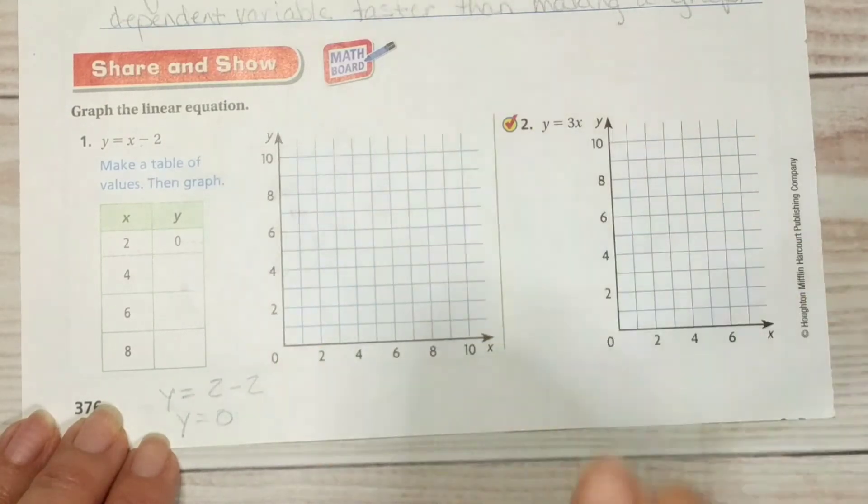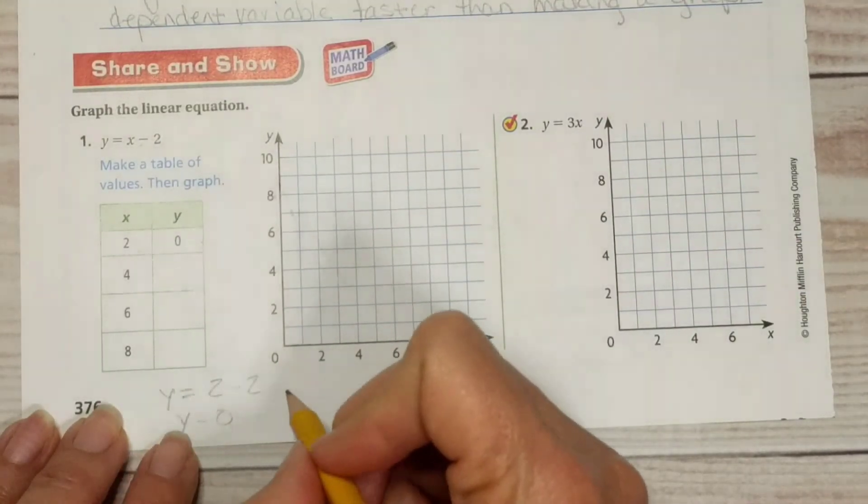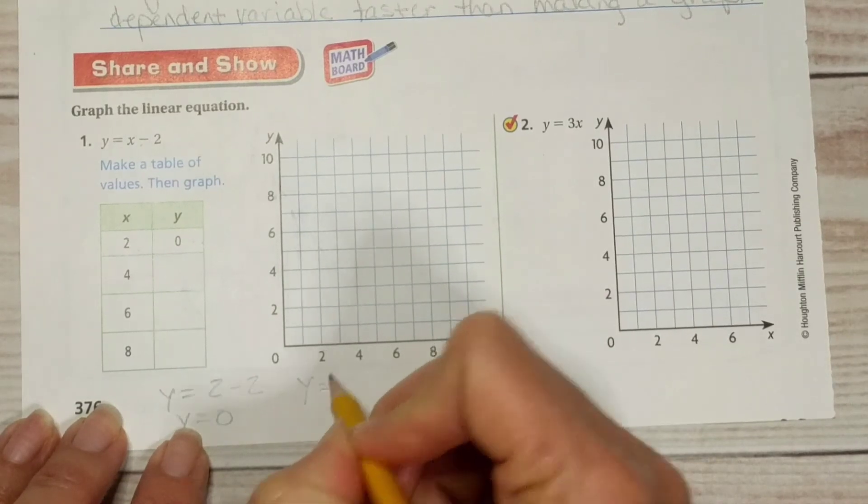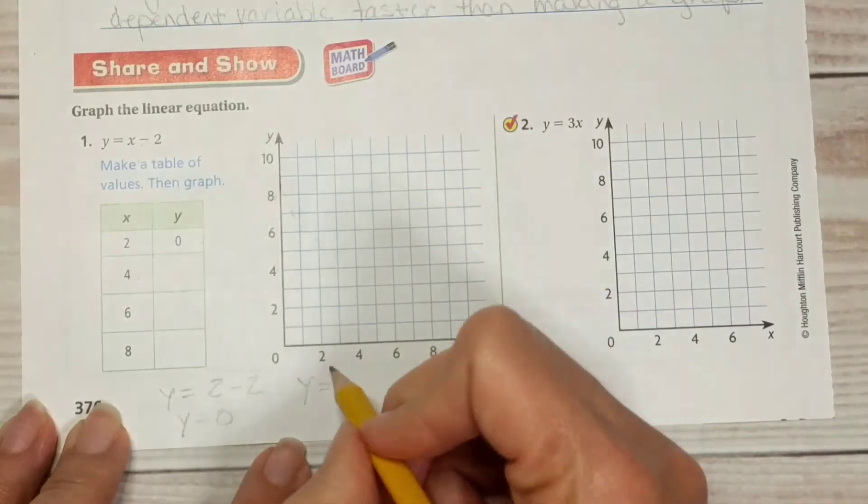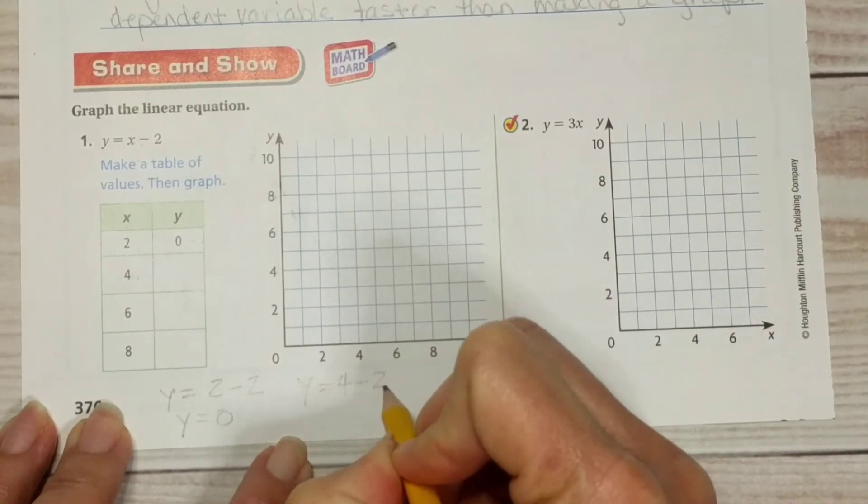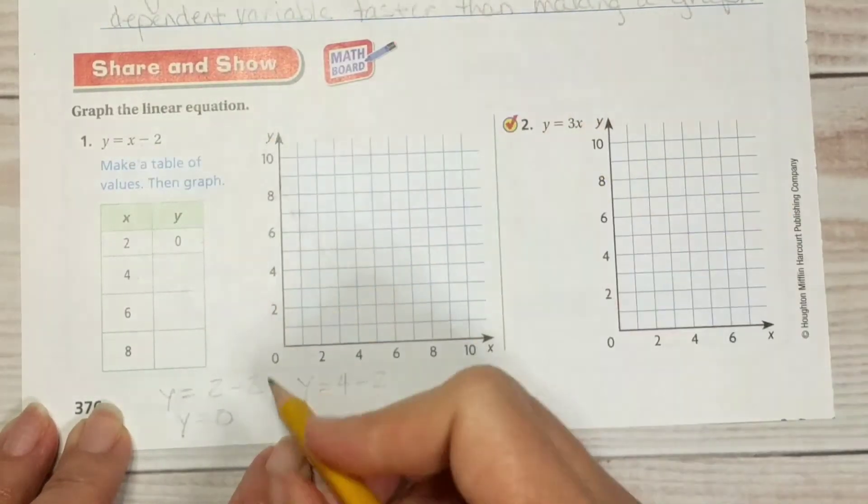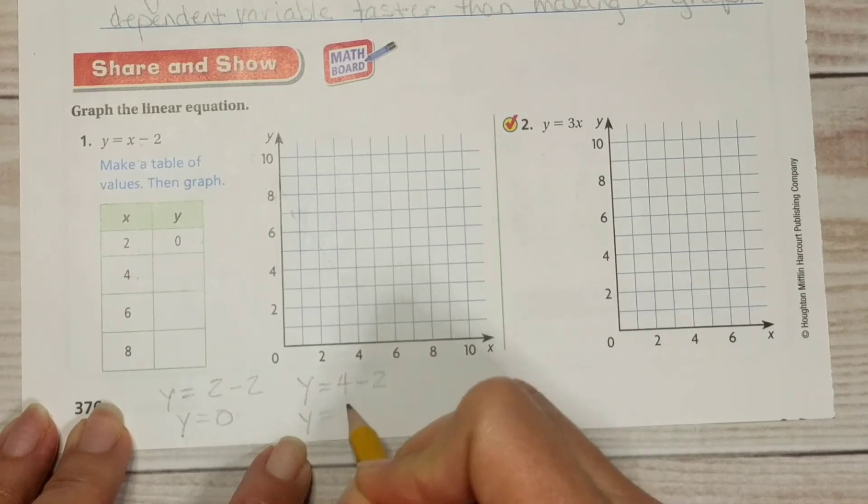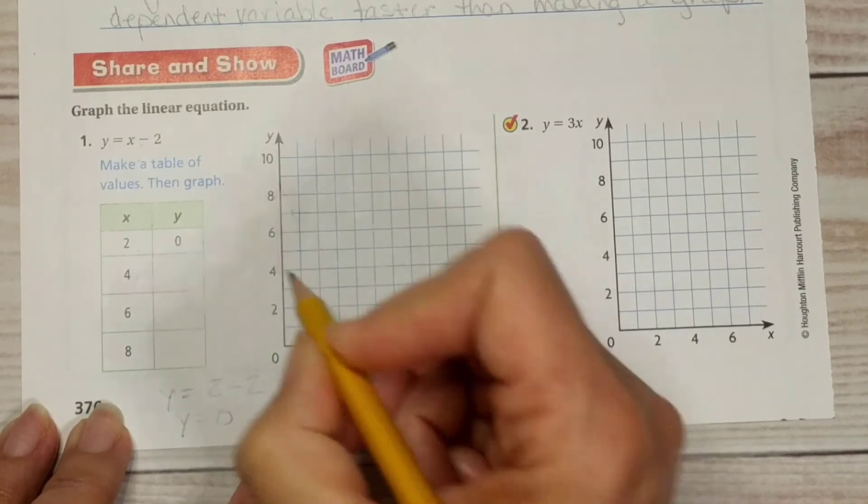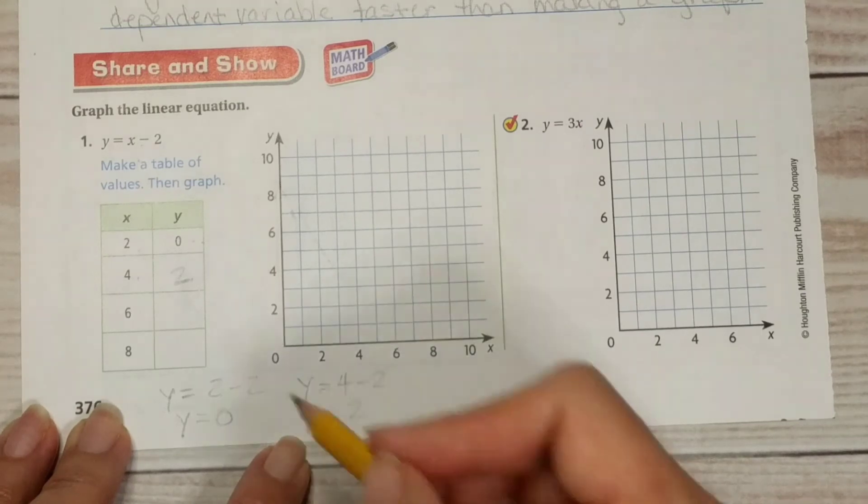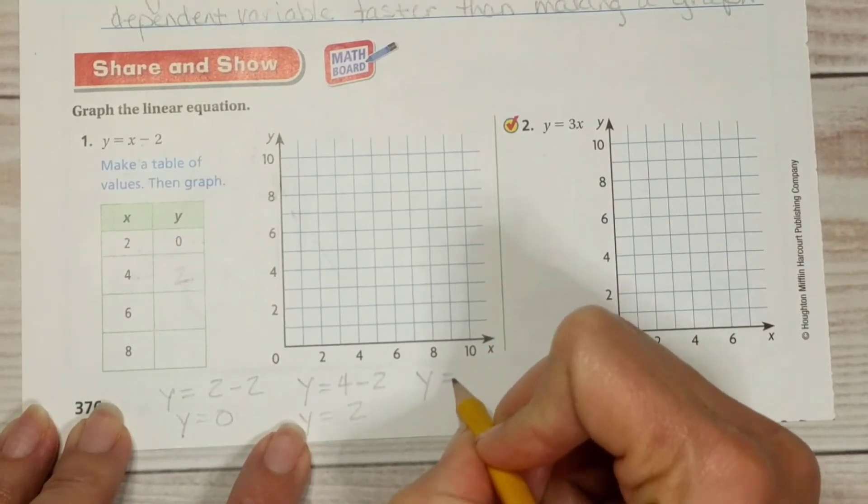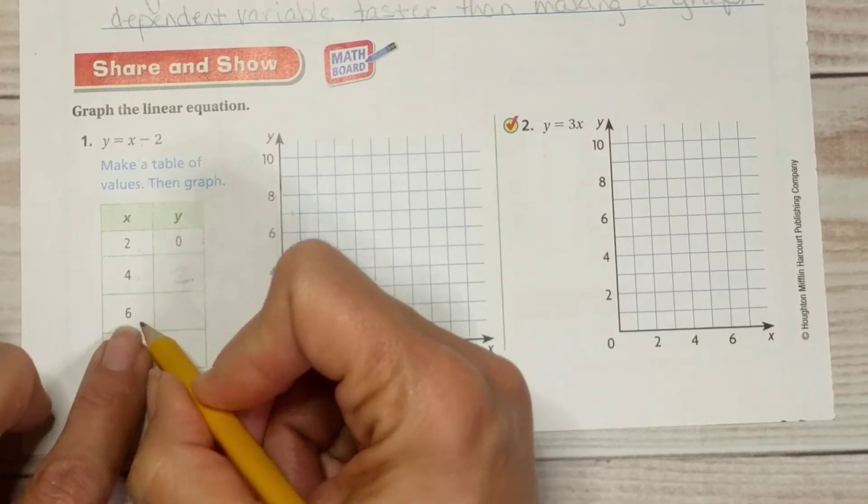All right let's do our last two examples here. All right so we have graph the linear equation y equals x minus 2 so for every x value we're going to subtract 2. So let's see we need some space for working don't we.